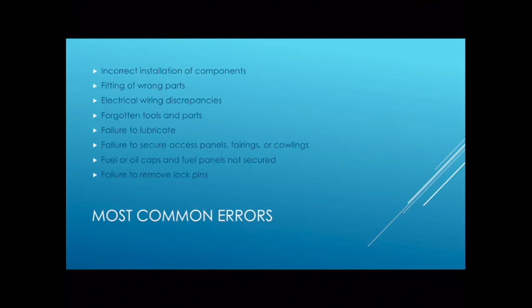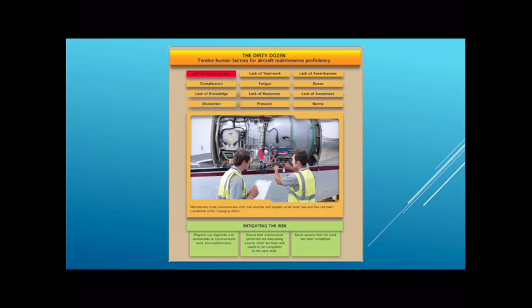With these most common errors there are a lot of different factors that can go into creating them. That's where the dirty dozen comes in. The dirty dozen is items that have been taken from the PEAR model and crafted specifically to the kinds of issues we see in aviation maintenance. You can view these as the most common things to watch out for when we audit the work of ourselves and others, or to understand what risks we have at different phases in the maintenance process.